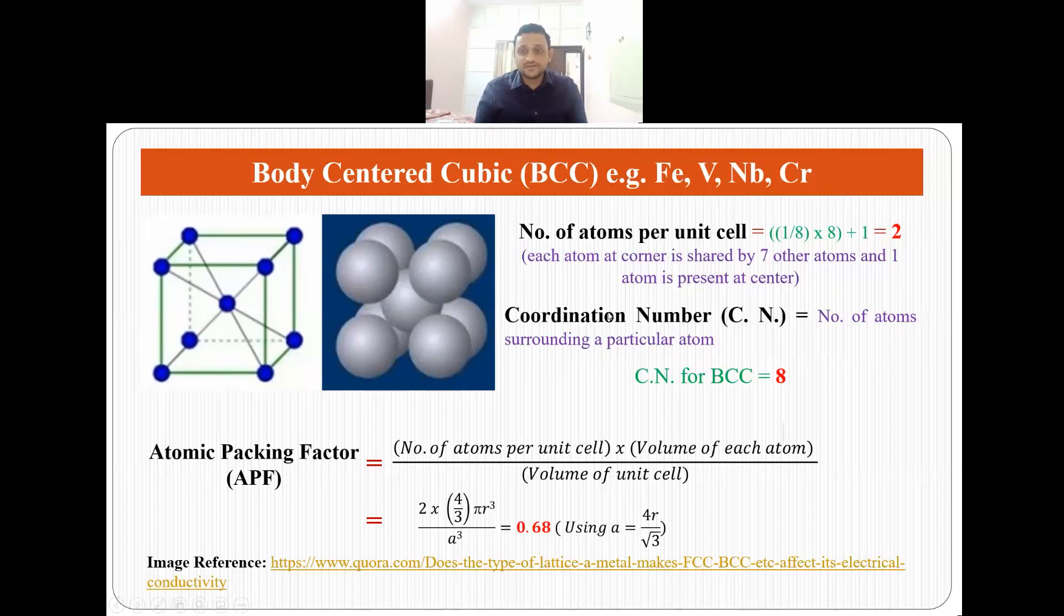The coordination number, that is number of atoms surrounding a particular atom in BCC is 8. Suppose we take this atom, there are 1, 2, 3, 4, 5, 6, 7, 8 atoms surrounding this central atom. That is why coordination number for BCC systems is 8.